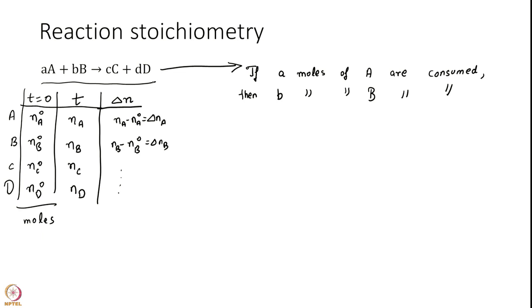I want to find out how many moles of B will be consumed if delta NA moles of A are consumed. So, we do it in a simple fashion. If 1 mole of A is consumed then b over a moles of B are consumed.